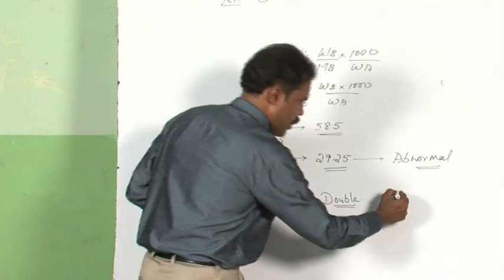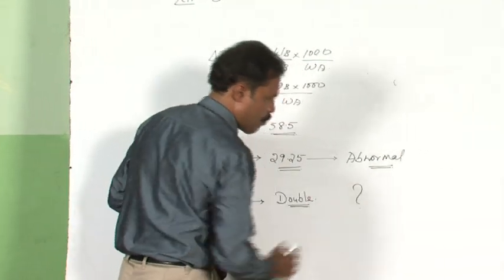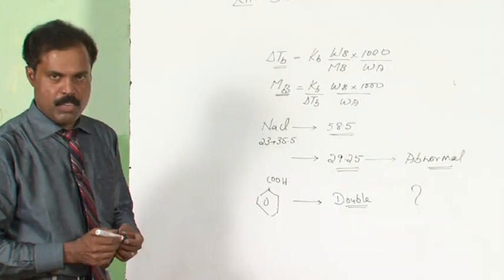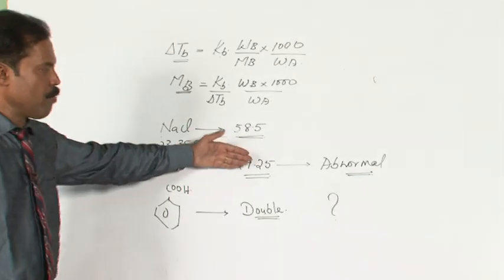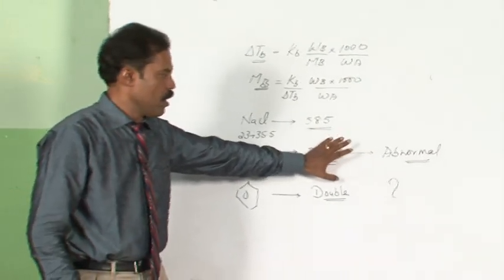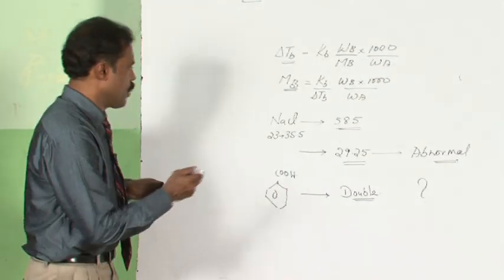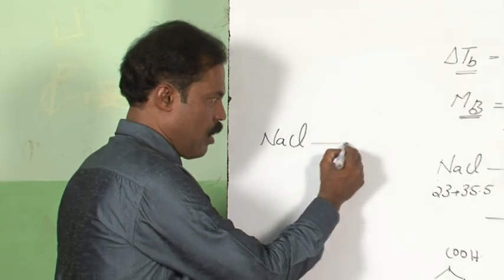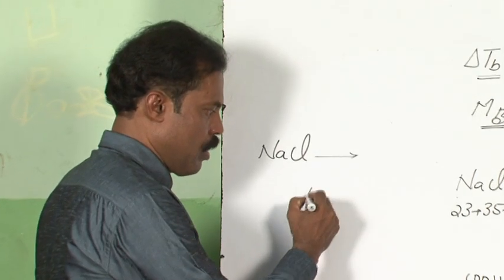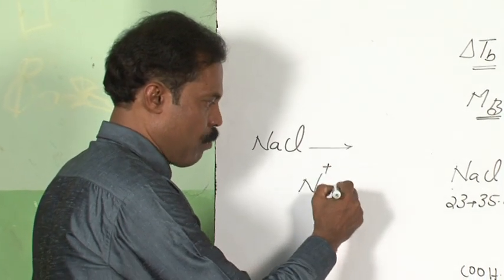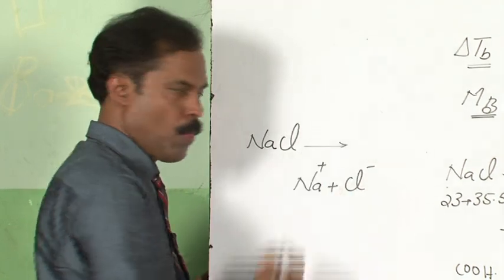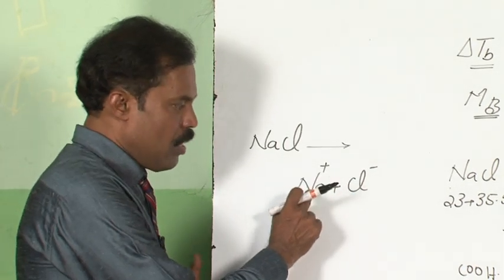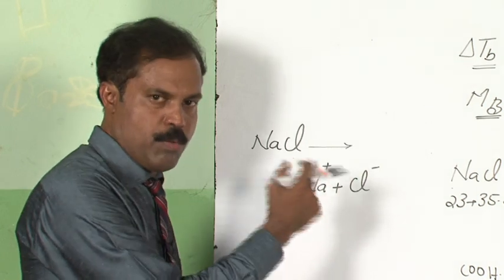We will try to understand why this abnormality is happening and why it is not happening with every substance. Let us consider sodium chloride once again. As you know, sodium chloride in aqueous solution dissociates to form Na⁺ and Cl⁻. As you can see, the number of particles gets doubled.